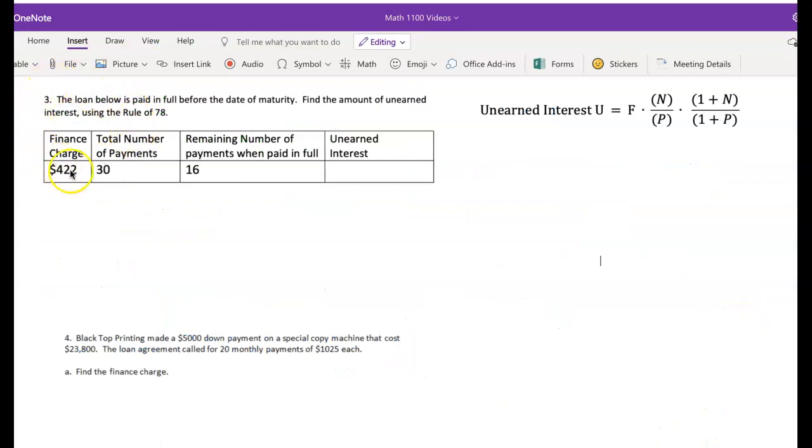Let's move on to question three. The loan below is paid in full before the date of maturity. Find the amount of unearned interest. Here's our unearned interest formula. Let's go ahead and get started. The finance charge is $422. That's our F. The total number of payments is going to be our P value. The remaining number of payments is going to be our N value.